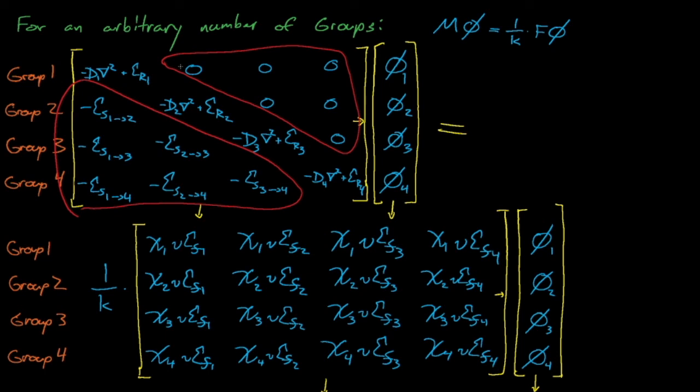So now we've arrived right where we want to be. We can generate equations that describe the diffusion equation for any arbitrary number of groups. How many groups you really need depends on the system you're analyzing and the complexity of the system's neutron flux spectrum. In the next lecture, we'll discuss how to generate multigroup cross-sections for these new multigroup equations. It turns out that generating accurate multigroup cross-sections is the trick to getting accurate multigroup diffusion results. Thank you very much.